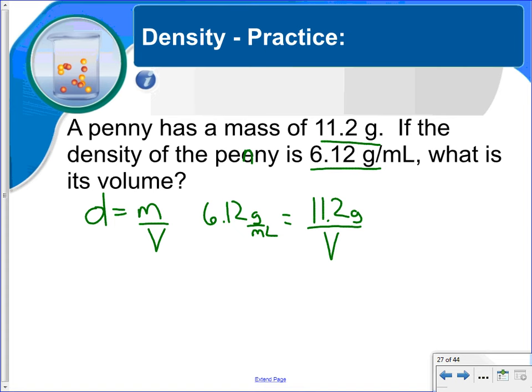So what you do here mathematically is you cross multiply the 6.12, and you really don't have to show this, but I'm just going to show it here to review the math. So you end up with 6.12 times V is equal to 11.2. And then what you do is divide 6.12.